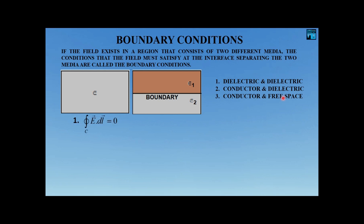To derive the boundary conditions we need some mathematical tools. Our first mathematical tool is the closed line integral: the closed path integral of E dot dl equals zero.